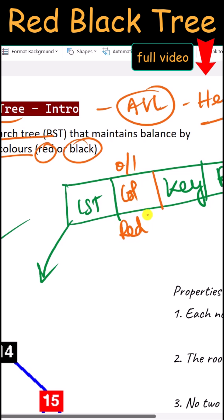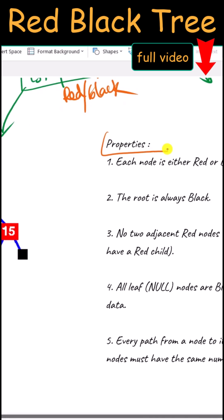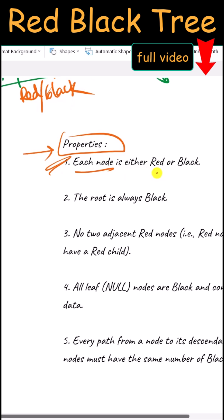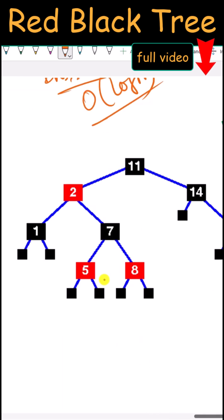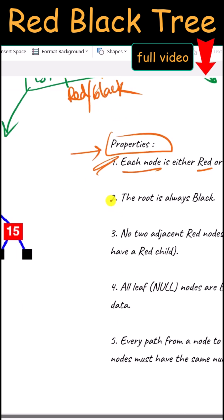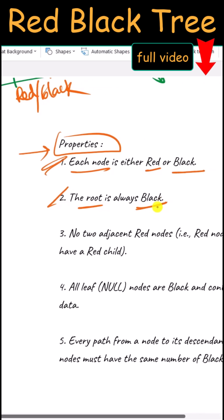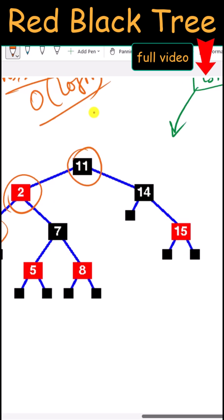These are the properties of the red-black tree. First, each node can be either red or black. Second, the root node will always be black.